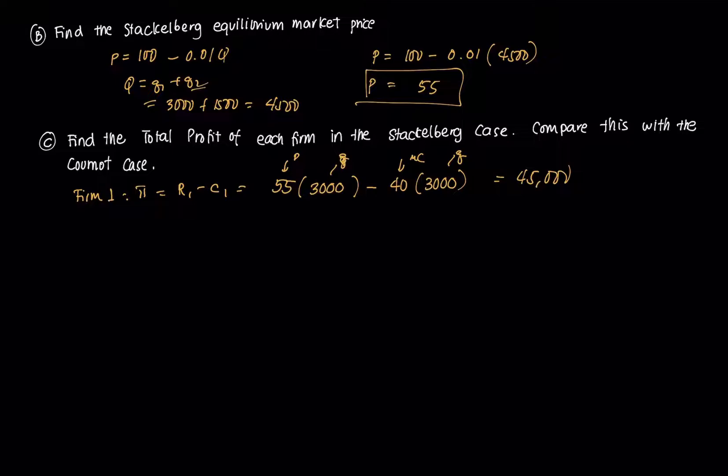Then for firm two, the profit two is just R2 minus C2. So that's 55 times 1500 minus 40 times 1500. You get 22,500. Notice since firm one is the leader, this is the leader's profit which is far higher. And this is the follower's profit which is far lower.